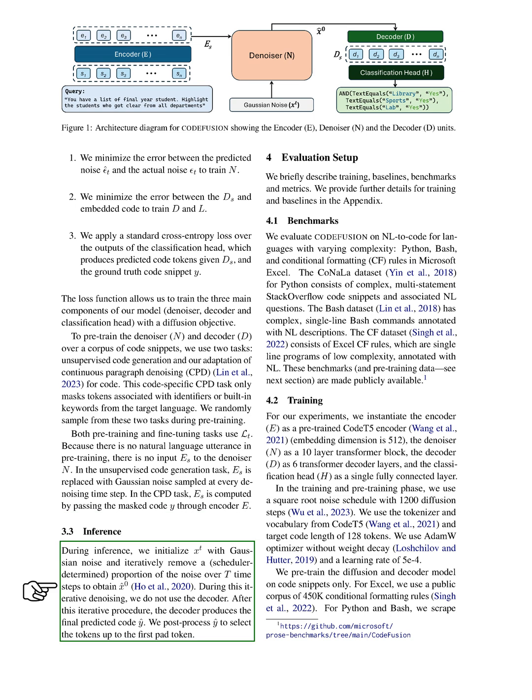During the inference stage, we start with Gaussian noise and gradually remove a certain proportion of the noise over a number of time steps to obtain the final predicted code. We then select the tokens up to the first padding token.